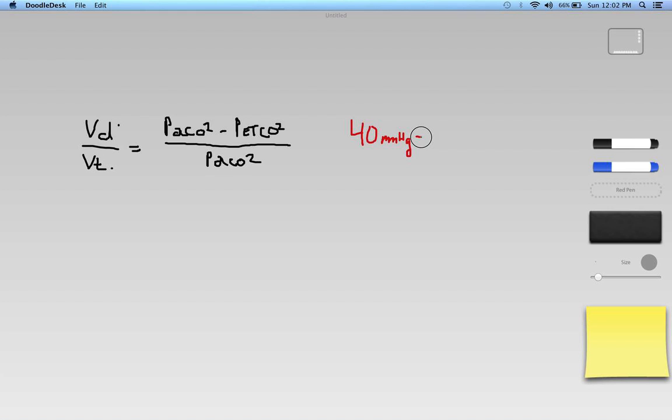Okay, so 40. And we'll just say that the end tidal CO2 is measured at 35 millimeters of mercury. And then I'm going to divide all that again by the original PaCO2, the 40 millimeters of mercury.